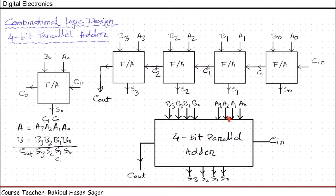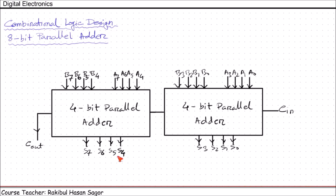In the 8-bit parallel adder, we will have inputs A0 through A7 and B0 through B7. The result will be S0 through S7 with a carry out. This is the design of an 8-bit parallel adder using two 4-bit parallel adders. The Cout of the first 4-bit parallel adder is connected with the Cin of the second 4-bit parallel adder.